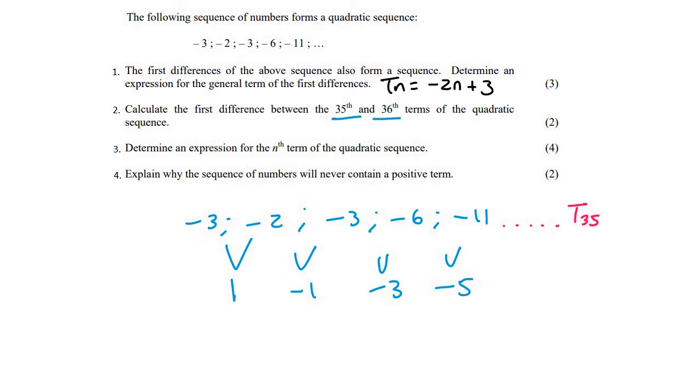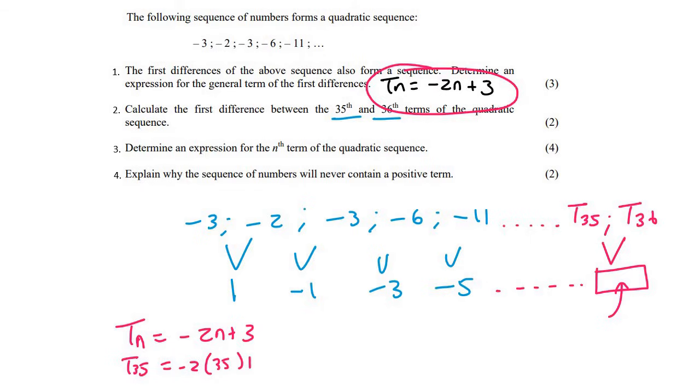eventually you would get to term 35. And then there would be term 36. And there would be a number for the first differences that would be between them. And that is the number that we are trying to find. So that would be term 35 in the first differences. So we already have a formula for the first differences. So we can just say that Tn is equal to minus 2N plus 3. And we want the 35th one of those. And so we say minus two times 35 plus three. And that's going to be negative 67.